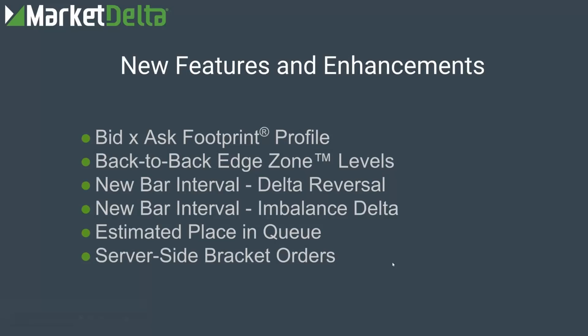Here's the things we're going to cover. I'm going to tackle the Bid Ask Footprint Profile — this is a new footprint type. It's really neat, and there's some neat ways that you can customize it. I'll show how to manipulate it, what the settings are, and then look at a few use cases. Then Anthony's going to hit the edge zones — there's some great new enhancement there. And then I'll tackle those other four topics, though they'll go a little bit quicker.